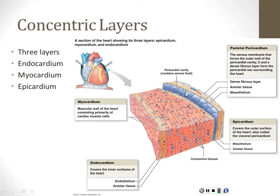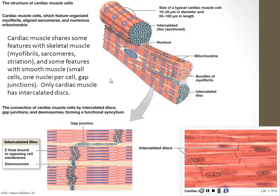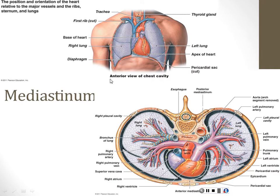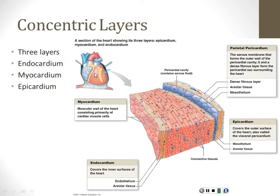The heart sits in a bag called the pericardial sac. In this picture, the bag has been cut away in front — those little tongs are pulling on the bag that the heart lives in. The heart lives in a bag so that it can move independently of its surroundings. So those are the three layers of the heart.